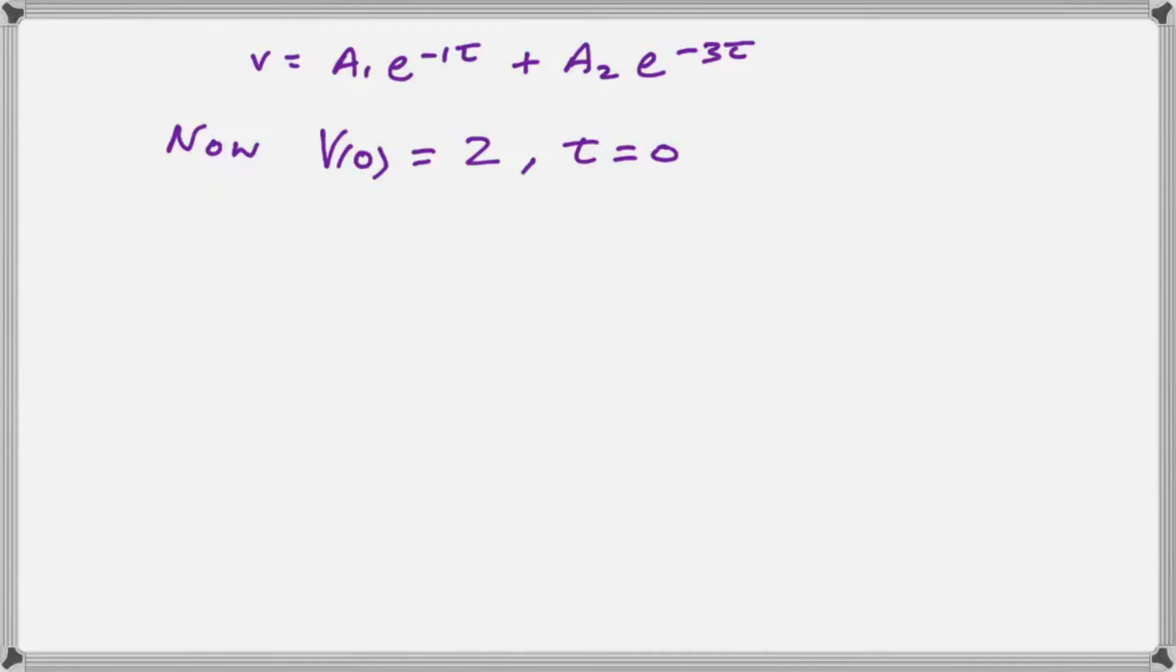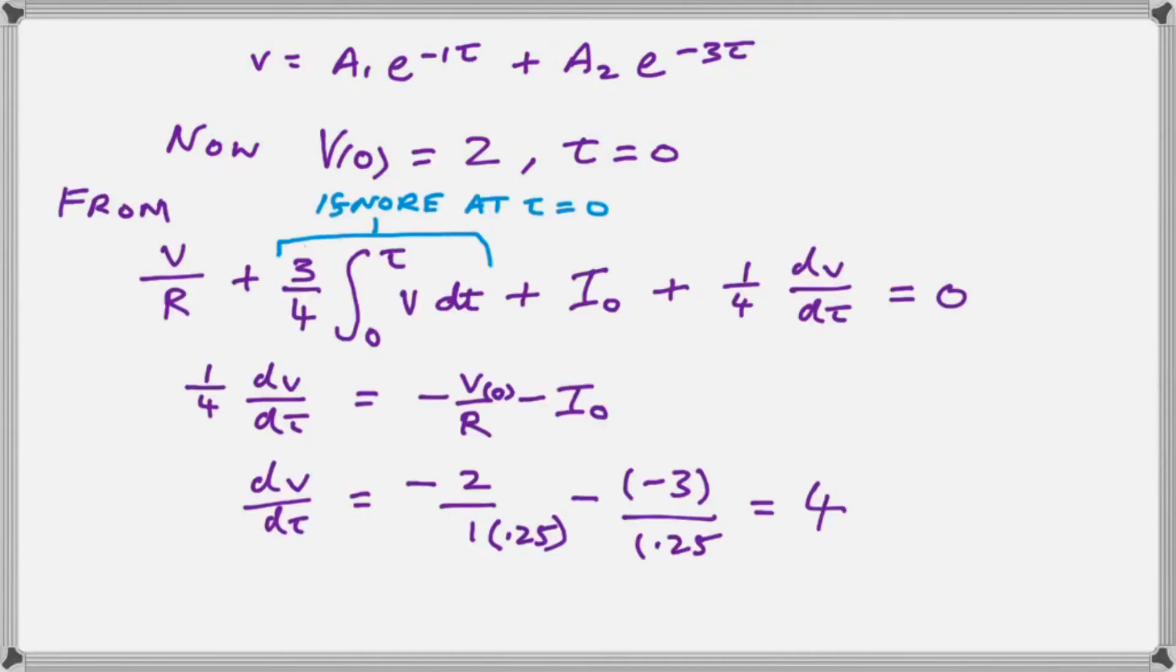If at t equals zero, the exponents disappear and we have a1 plus a2 must equal two. And we're going to see that in a minute. We want to rearrange our initial KCL equation to make dv dt the subject. So we just do a little fancy algebra and we explain to you that we can ignore the integral because at t equals zero, the integral has not yet started to build up.